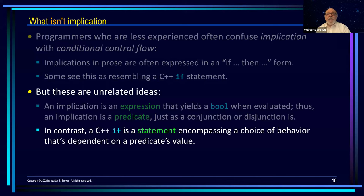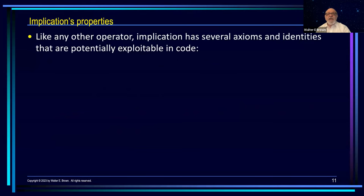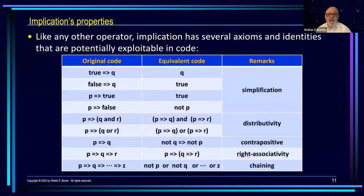Let me talk briefly about some of the properties of implication, because like any other operator, implication has some axioms and identities that are potentially exploitable in code. The error of Q is often known as the positive form. Not Q implies not P is therefore known as the contrapositive, and they are always equivalent. Also note that implication is typically right associative. And finally, implication can be chained.